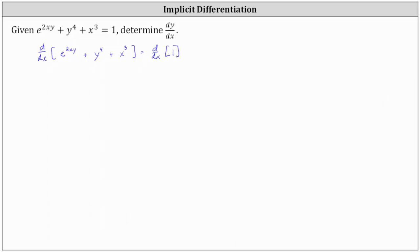On the left, we begin by differentiating e to the power of 2xy with respect to x. We have to apply the chain rule here, where the exponent 2xy is equal to u. The derivative of e to the u with respect to x is e to the u times u prime, which gives us e to the power of 2xy times the derivative of 2xy with respect to x.